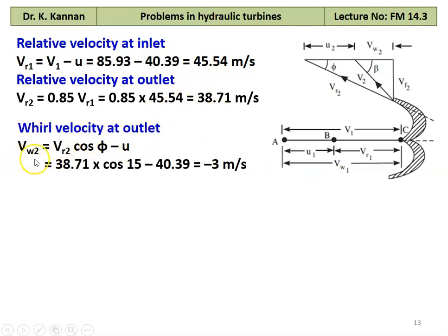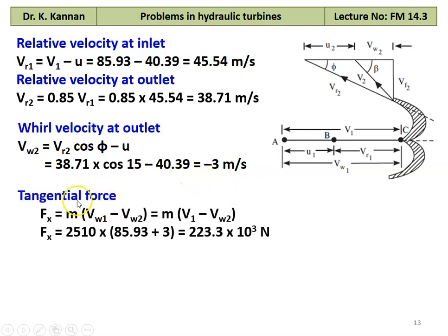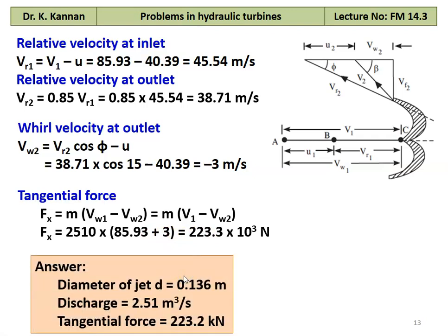Tangential force Fx = M × (Vw1 − Vw2) = M × (V1 + |Vw2|). Since Vw2 is negative, the minus sign becomes plus. Answer: Jet diameter = 0.136 m, total discharge = 2.51 m³/s, tangential force = 223.2 kN.